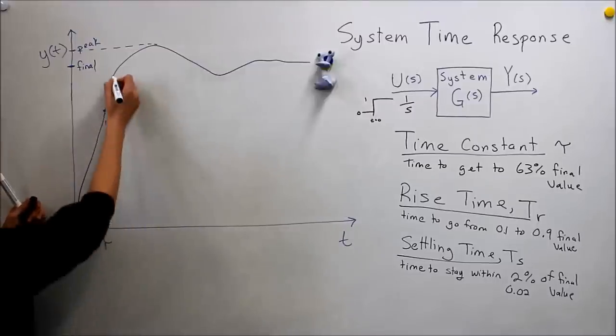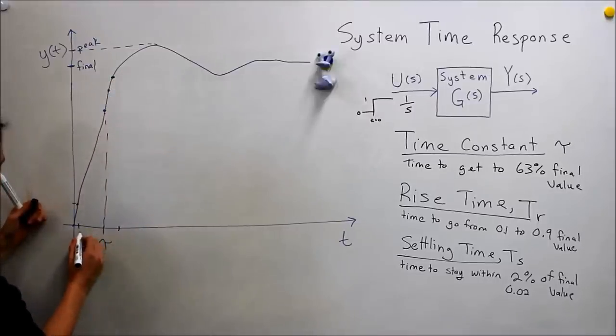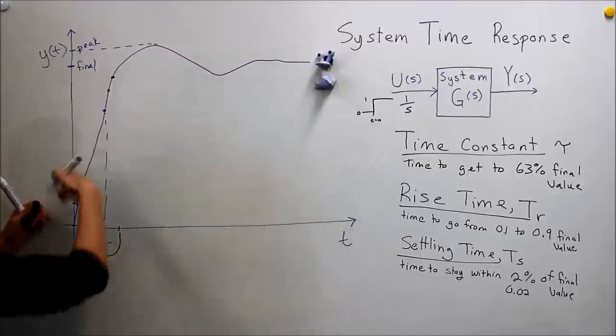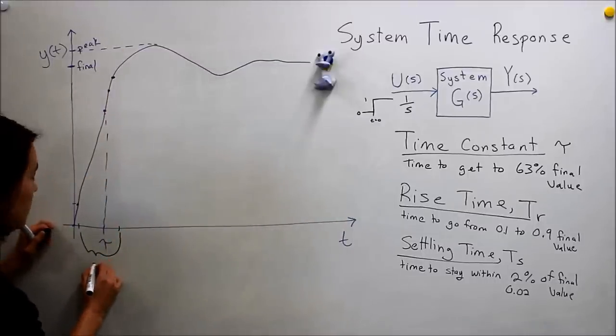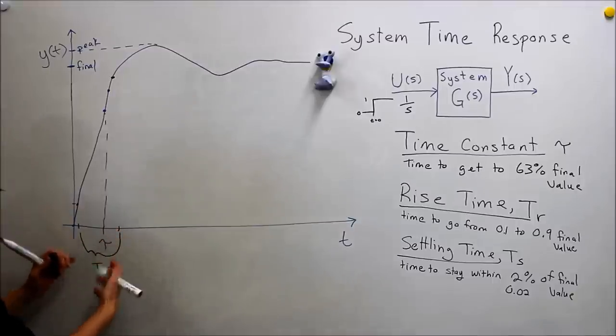So this value here, of course we'd have to calculate it if we knew this actual expression, but we would call this t sub r. So this unit of time is our rise time.